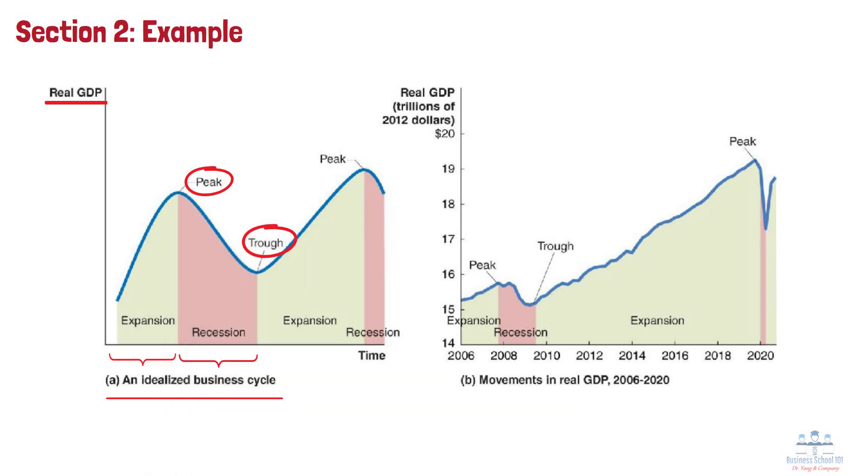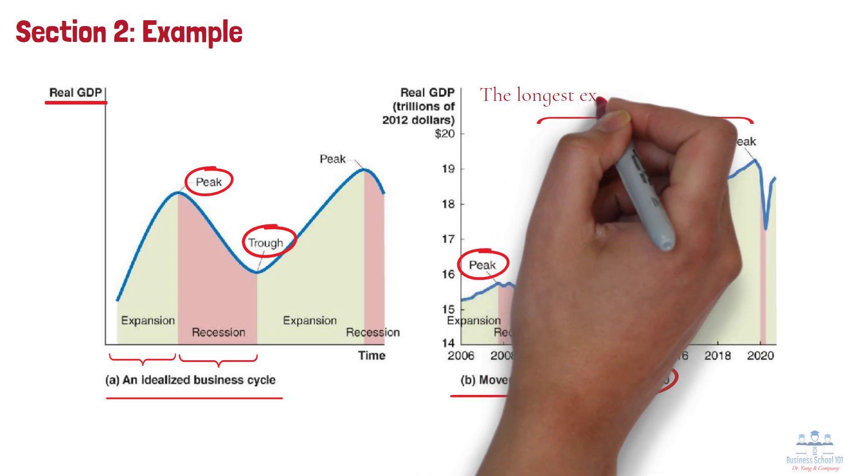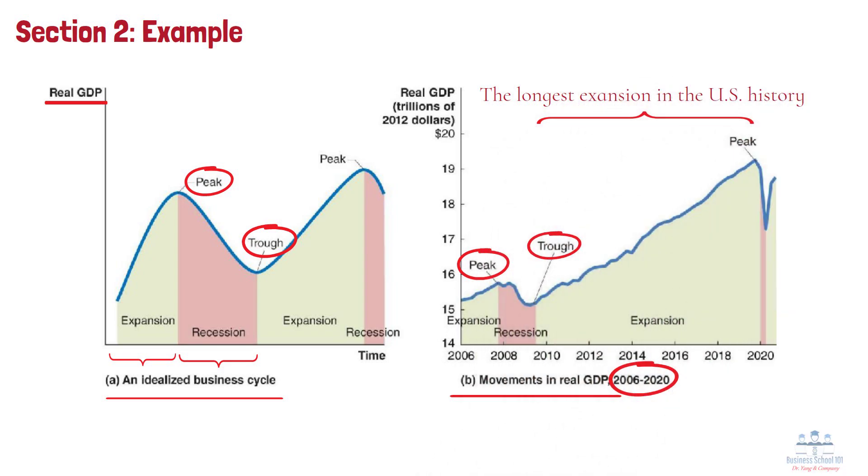Number 2: The right panel shows the somewhat messier reality of an actual business cycle during the period from 2006 to 2020. After an expansion that started in 2001, we hit a peak in December 2007, then plunged into what became known as the Great Recession, the worst downturn since the 1930s. But in June 2009, we hit bottom and bounced back into what would become the longest expansion in U.S. history, lasting over 10 years. Then came the unexpected, in February 2020, the COVID-19 pandemic pushed us into a brief recession that lasted just until April.